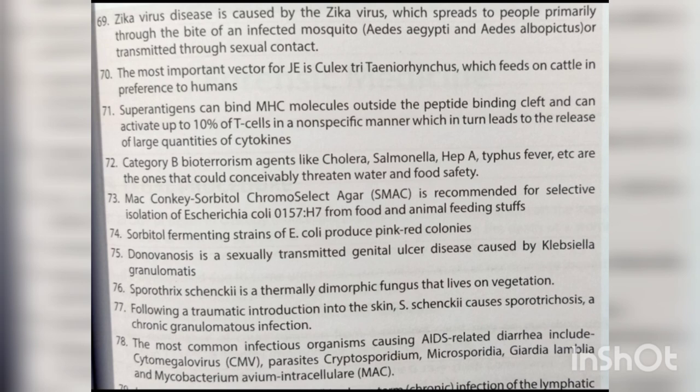Sorbitol-fermenting strains of E. coli produce pink-red colonies. Donovanosis is a sexually transmitted genital ulcer disease caused by Klebsiella granulomatis. Sporothrix schenckii is a thermally dimorphic fungus that lives on vegetation; following traumatic introduction into the skin, it causes sporotrichosis, a chronic granulomatous infection.